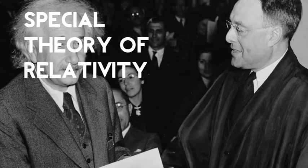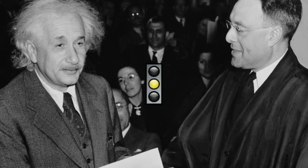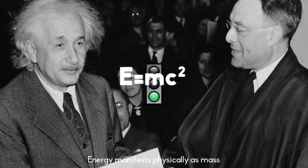This comes from Einstein's famous special theory of relativity. According to this theory, spacetime is curved, the speed of light is the speed limit of the universe, and as objects approach it, their energy manifests physically as mass, represented by the equation E equals mc squared.